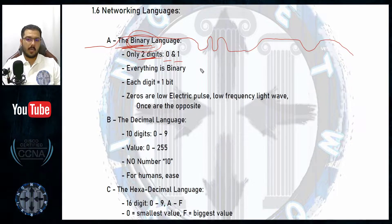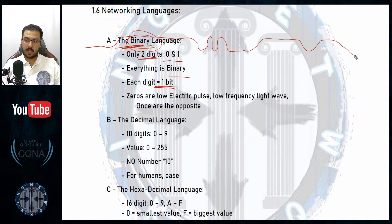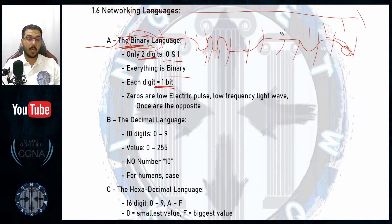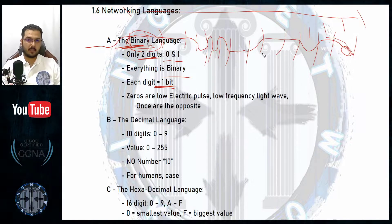Everything is binary. Every single digit equals only one bit in size. When you send a one, a zero, another one, another zero — each of those is a bit. Even if it was a zero, the size is still a bit. We expressed a zero digit by sending a bit.